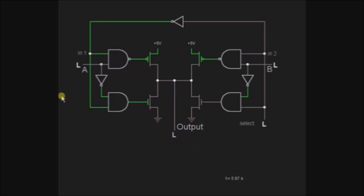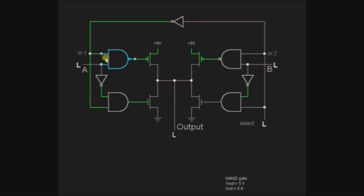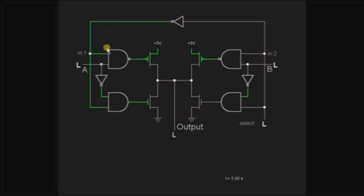We will check how the output is connected with the input. We know the operation of the NAND gate and AND gate. This is the selection line input and this is the input from the MUX. When the selection line is high and the input line is low, the NAND gate output will be high.